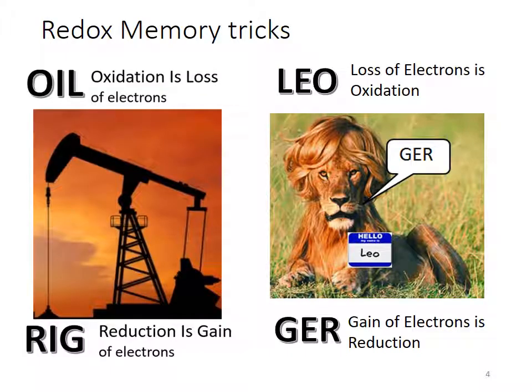There are a couple of memory tricks to remember oxidation and reduction. The first is OIL RIG: oxidation is loss of electrons, and reduction is gain of electrons. Another is LEO the lion says GER. LEO — L-E-O — loss of electrons is oxidation, and GER — G-E-R — gain of electrons is reduction. The LEO the lion one is easier to remember because it also tells you what you're losing or gaining right in the memory trick itself.